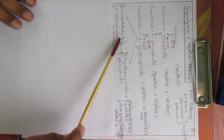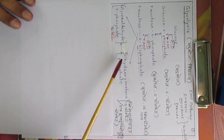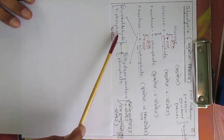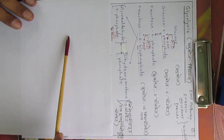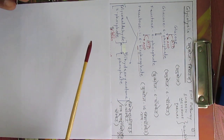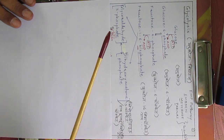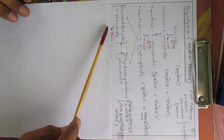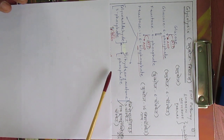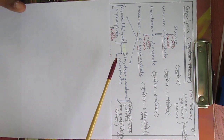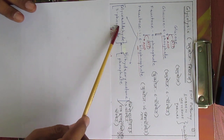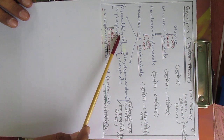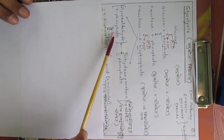Fructose-1,6-bisphosphate then gets split into two molecules: glyceraldehyde-3-phosphate (G3P) and dihydroxyacetone phosphate (DHAP). These two substances undergo the same further reactions. We will follow the glyceraldehyde-3-phosphate molecule through the next steps.